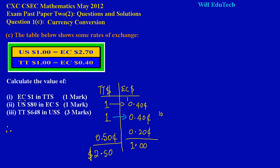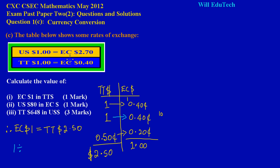Therefore, EC$1 is equal to TT$2.50. Another easier way to calculate this directly is to take the one EC dollar and divide by the rate of exchange, which is 0.40 (forty cents), and that gives you $2.50 straight away. You can try that on your calculator and you'll get TT$2.50. That's part one.